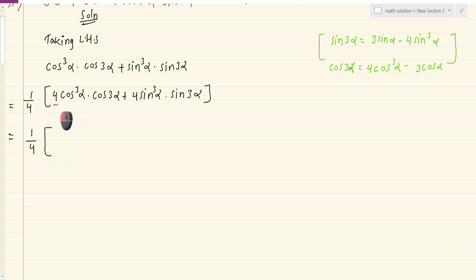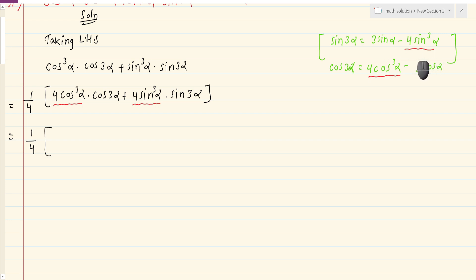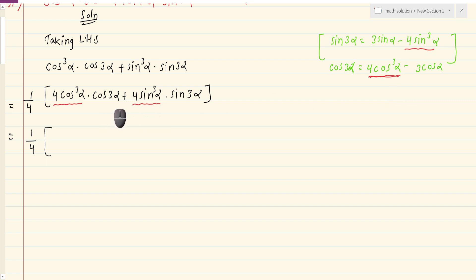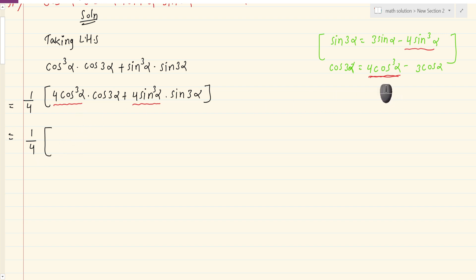We have 4 cos cube alpha on one side and 4 sin cube alpha on the other side. We can simplify: 4 sin cube a equals 3 sin alpha minus sin 3 alpha, and 4 cos cube alpha equals cos 3 alpha plus 3 cos alpha. We can derive and apply these formulas.